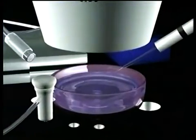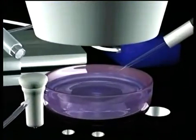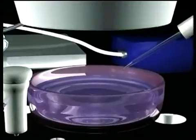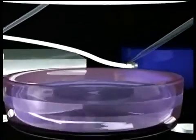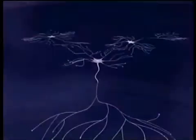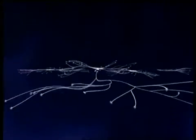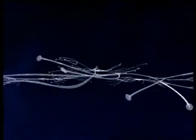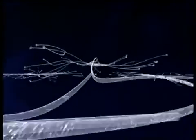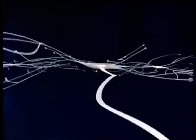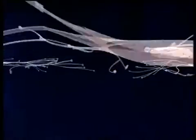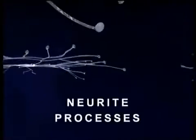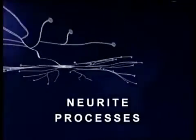To better understand mercury's effect on the brain, let us first illustrate what brain neurons look like and how they grow. In this animation, we see three brain neurons growing in a tissue culture, each with a central cell body and numerous neurite processes.